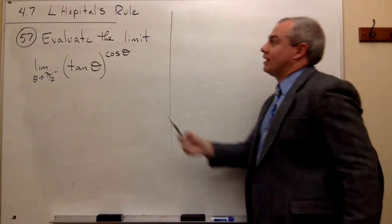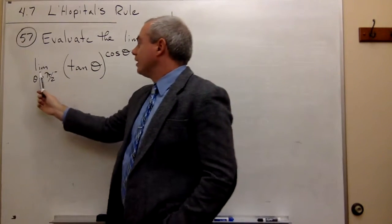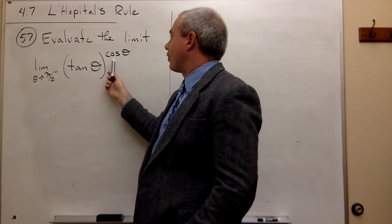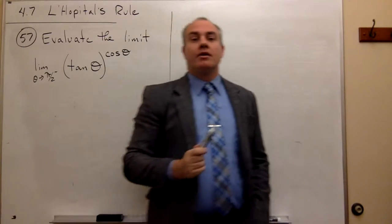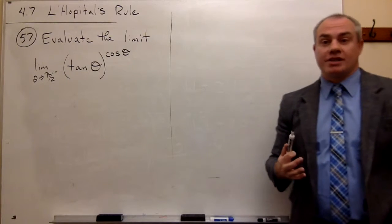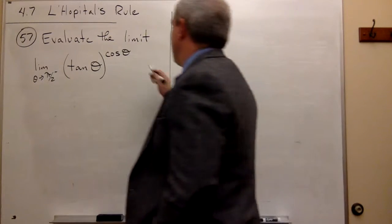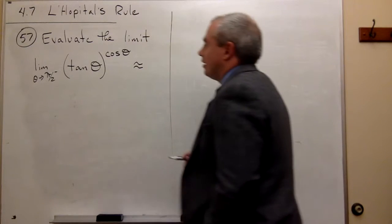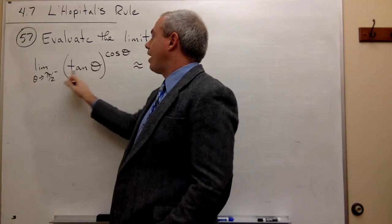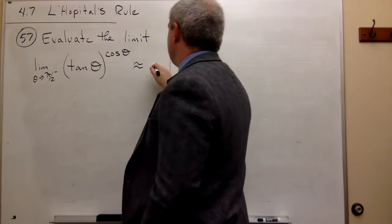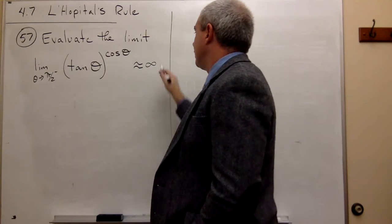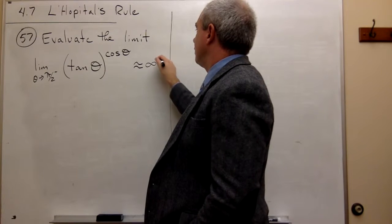In problem number 57, we'd like to evaluate the limit as theta goes to pi over 2 from the left of tangent of theta raised to the power cosine of theta. The first thing I want to do is figure out what kind of indeterminate form we're dealing with. If I plug in pi over 2, tangent of pi over 2 is kind of like infinity, and cosine of pi over 2 is kind of like zero.